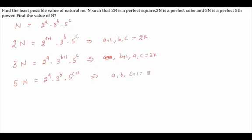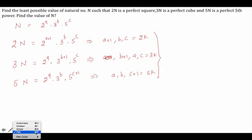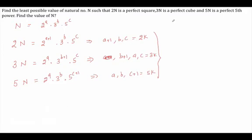Comparing all three conditions and concentrating on the term a: a+1 must be a multiple of 2 (even), a must be a multiple of 3, and a must be a multiple of 5. What is the smallest number satisfying these three conditions? Since a must be a multiple of 5, let us check: 5, 10, 15 — the smallest possible value is 15.